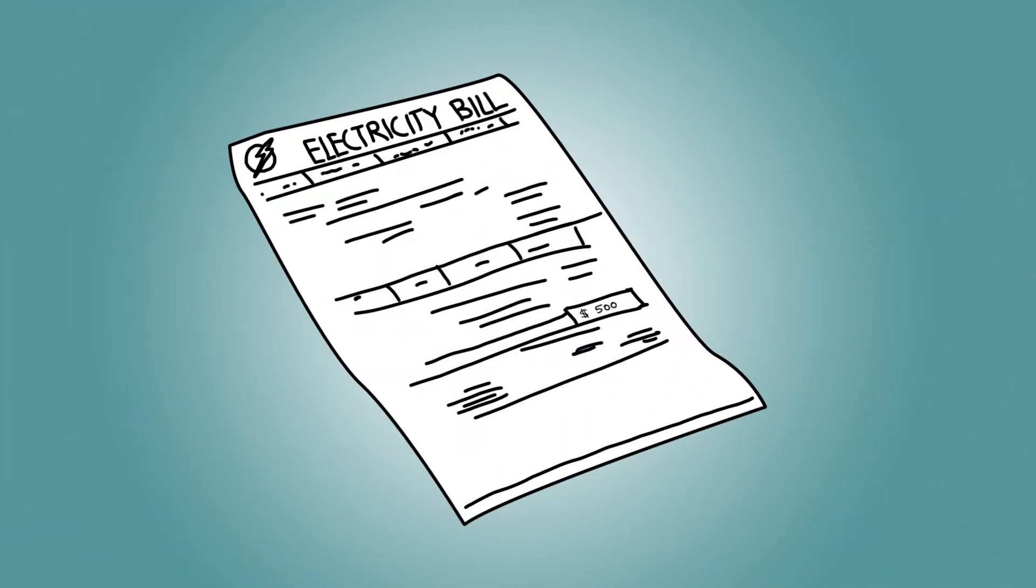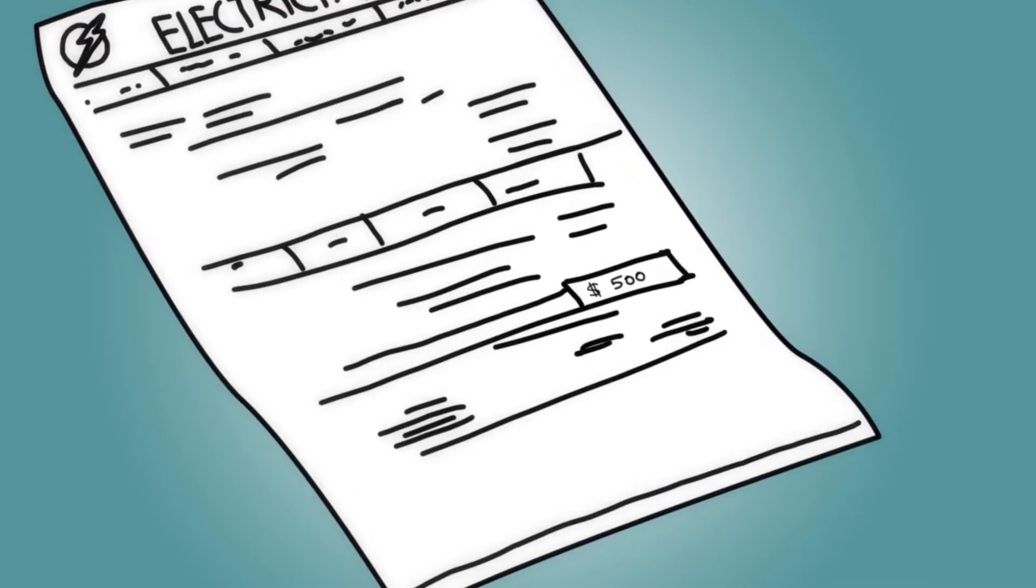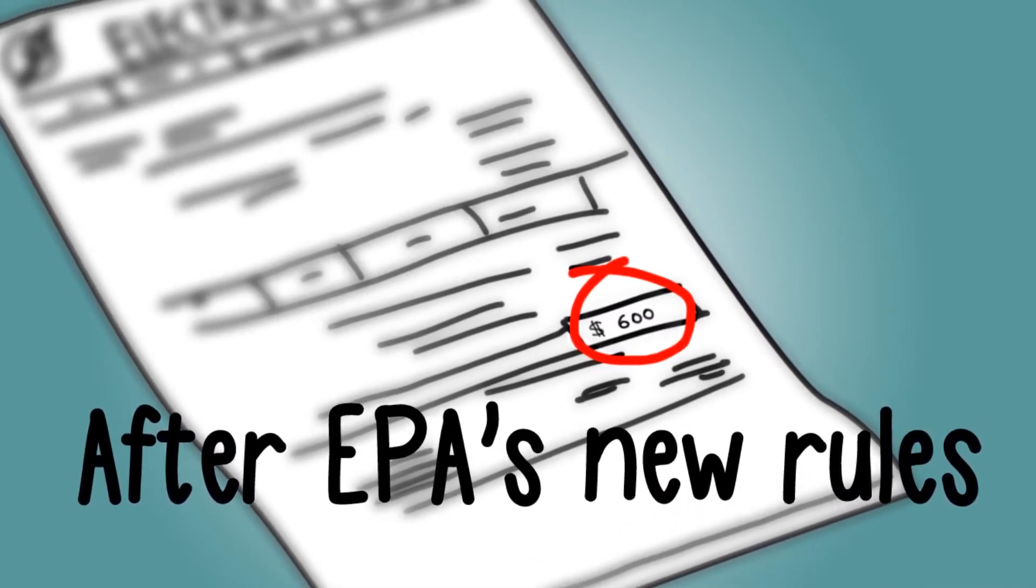And if the EPA's other proposed regulations go into effect, your family's electric bill will continue to skyrocket, maybe by 20%. And the capital costs to implement the EPA's new rules are estimated to exceed $2.2 trillion.